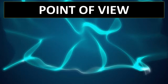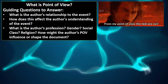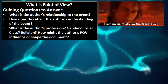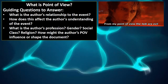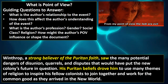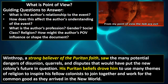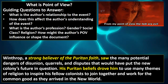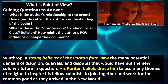Number four: point of view. What is the author's point of view of this particular document? Guiding questions: What is the author's relationship to the event? How does this affect their understanding? What is the author's profession, gender, social class, religion? How might the author's point of view shape the document? Can you find any sort of bias? Here's an example: 'Winthrop, a strong believer of the Puritan faith, saw the many potential dangers of disunion, quarrels, and disputes that would have put the new colony's future in question. His Puritan beliefs drove him to use many themes of religion to inspire his fellow colonists to join together and work for the common good as they arrived in the new world.' Think of this one as really searching for bias and then identifying that in writing.